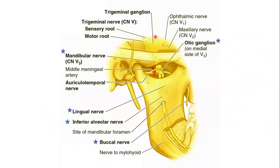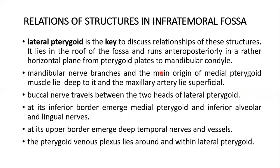The nerves present in the fossa include the mandibular nerve, the lingual nerve, the inferior alveolar nerve, and the buccal nerve. Also present is the otic ganglion, on the medial side of the mandibular branch of the trigeminal nerve. One nerve not shown is the chorda tympani nerve.